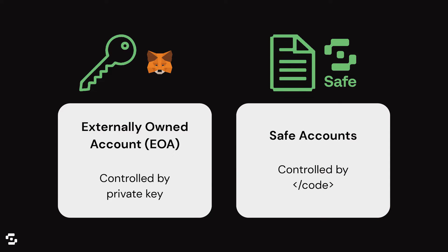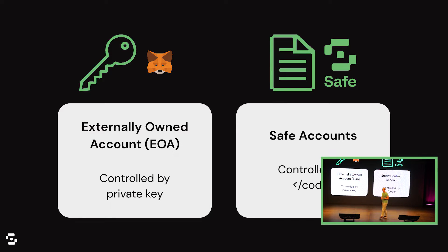Essentially, account abstraction tries to level the playing field between two types of accounts that we currently have on the Ethereum blockchain: externally owned wallets — the traditional account — and smart contract accounts. Externally owned accounts is pretty much what everyone is using if they use a MetaMask wallet, a Rainbow wallet, any kind of wallet.